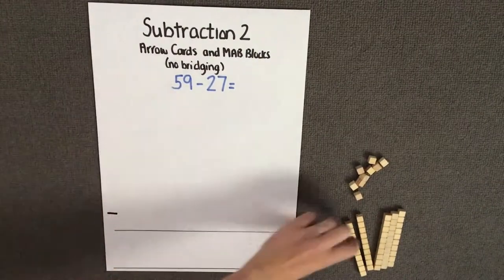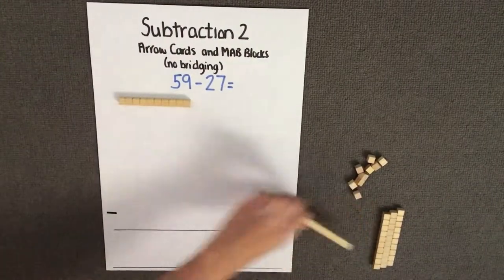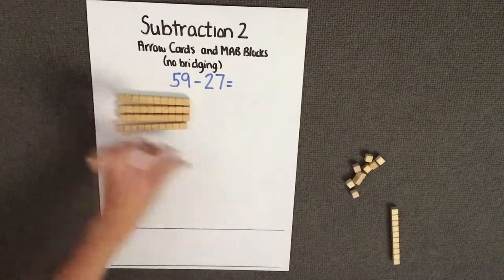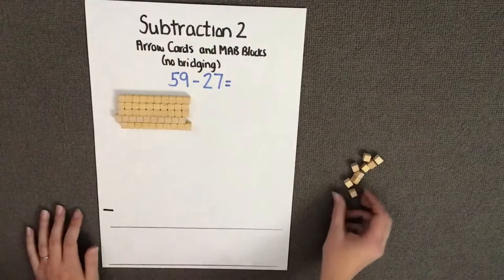So we count out our tens. I need 5 tens: 10, 20, 30, 40, 50, and I need 9 ones.